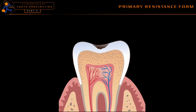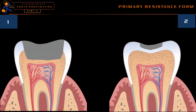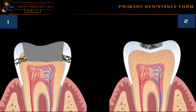Before going to the details of primary resistance form, let's see an example. There is a decayed tooth and we are doing two types of preparation. In the first preparation, there is a very big cavity prepared and it was restored with a restorative material. The material is quite thick and very strong because there is adequate bulk. In the second preparation, we made an ultra-conservative small cavity and restored it with the same restorative material, which is quite thin.